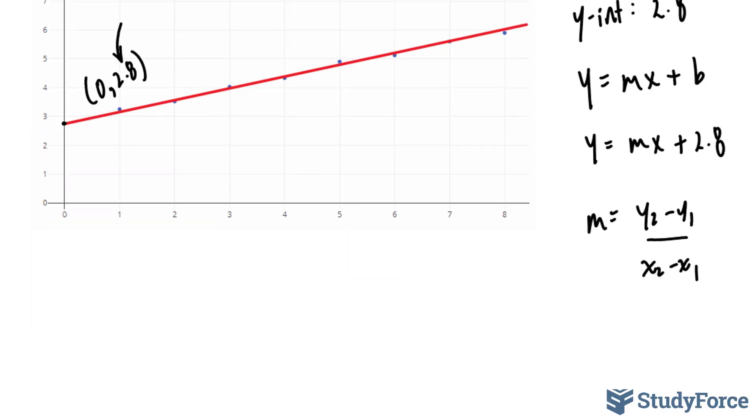eyeball the whole process, what we can do instead is use a point along the scatter plot that looks to be on the grid. For example, the point 3 looks like it's passing the y-coordinate 4. So we can assume that this point right here is 3 and 4. And of course, we know that this point over here is 0 and 2.8 because we said that the y-intercept is 2.8.